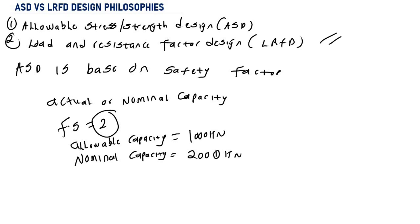Now let's talk about the second design philosophy: Load and Resistance Factor Design. Let's say we take the chair to the lab again and we know that the load it took the chair to fail was 2000 kilonewtons. If we test the load-bearing capacity again, do you think the chair will fail at exactly 2000 kilonewtons? Probably not — it might fail at 958 kilonewtons, or 1050 kilonewtons, or 3000 kilonewtons. There will be scattered values, and because of this we will have uncertainties.